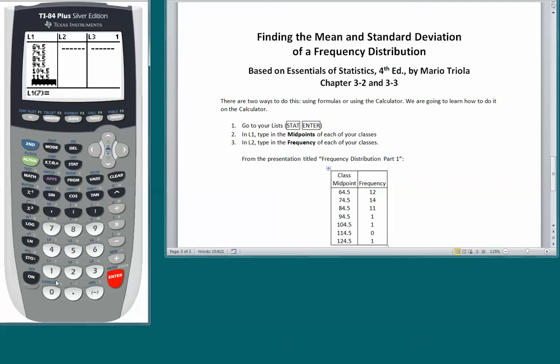ENTER. 124.5. ENTER. This tells us that we're on line 8, which means we have entered 7 values, and that's how many classes we have here, 7 classes.